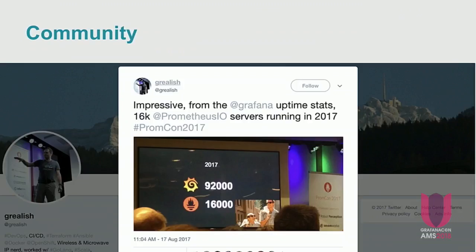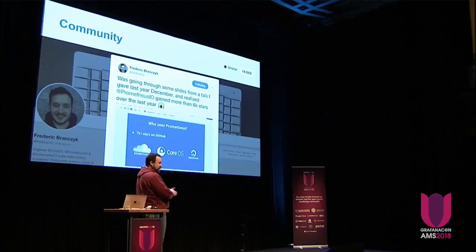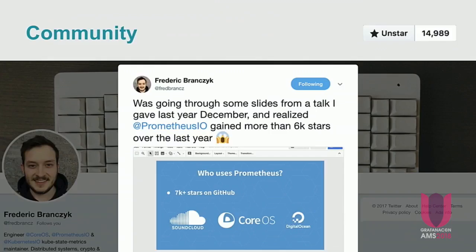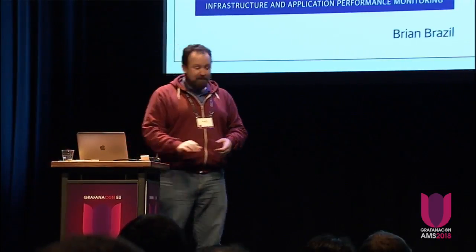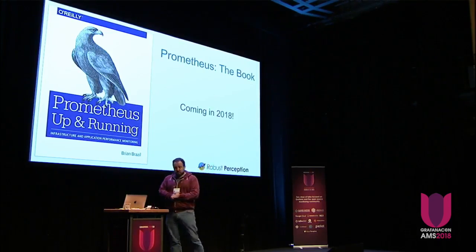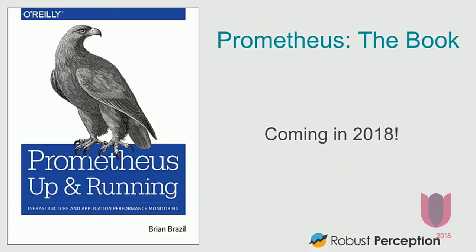I wanted to give a quick shout out to the Prometheus community. Our community is absolutely exploding — we've increased more than 5x in the last year in terms of usage. We also have GitHub stars; if we were a VC-backed project, we'd be going through the roof. At PromCon, our conference, we had more than 2x the attendees in 2017. We're running it again in Munich this year — the 9th and 10th of August. The CFP will be going out really shortly. Finally, Brian has written a book on Prometheus called Prometheus Up and Running. I've seen an early draft — it's really good — so I would highly recommend getting a copy when it comes out.